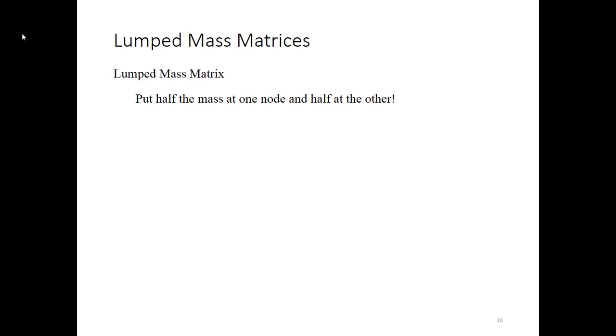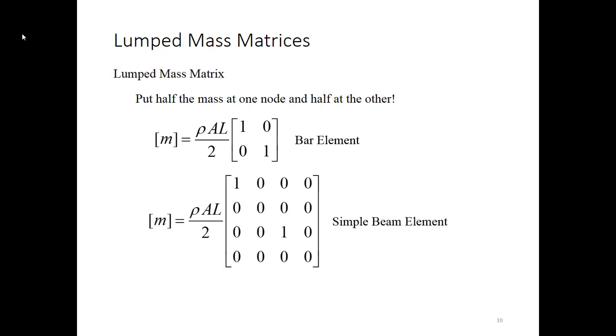The shortcut is that we use a lumped mass matrix, and as you see here, lumped mass matrix simply means that we lump the mass at each of the nodes. In the case of a bar or beam element, that means we put half the mass at each of the two nodes. So when I do that, I get a bar element mass matrix that's just diagonal and 1's on the diagonal. The mass matrix for a simple beam element is even simpler than that. It's just the two terms, and I don't have anything for the slope change degrees of freedom. So zeroes in those columns and rows.